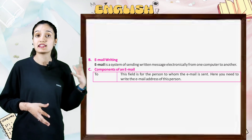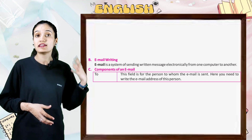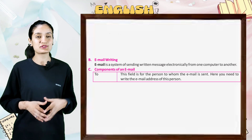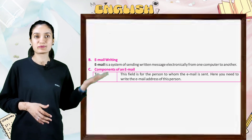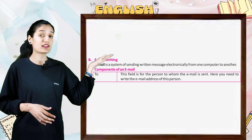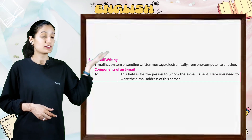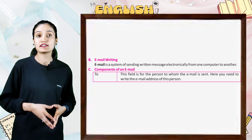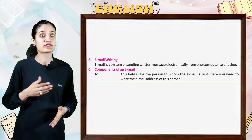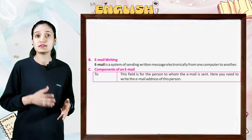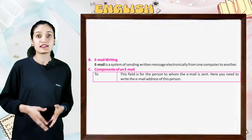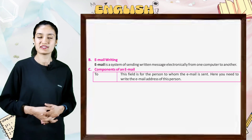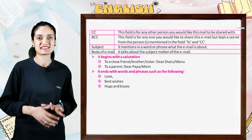Here are the components of an email. 'To' — this field is for the person to whom the email is sent. Here you need to write the email address of this person.